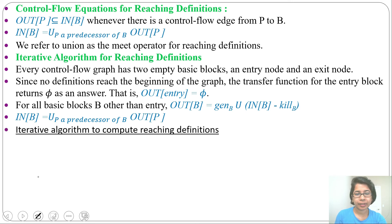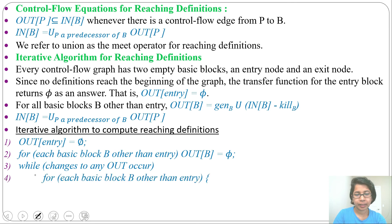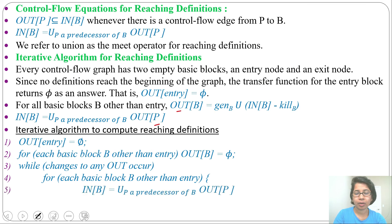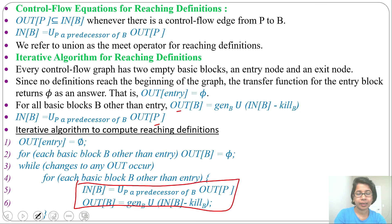Let me write the iterative algorithm to compute reaching definition. Initially, out of entry will be phi. Then for each basic block other than the entry, initially out of block will be phi. While changes to any out occur, for each basic block other than entry, we apply two formulas: in of B equals the union of all predecessors' out, and out of B equals gen of B union in of B minus kill of B. So these two are the important formulas for in and out.